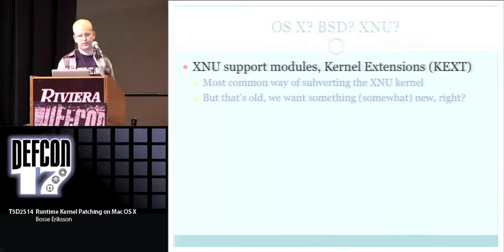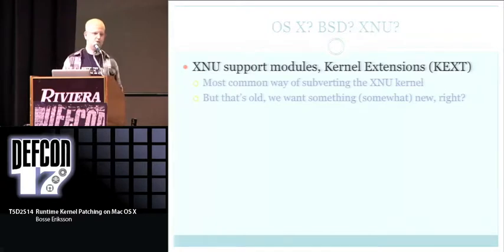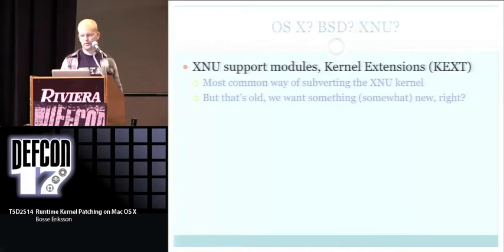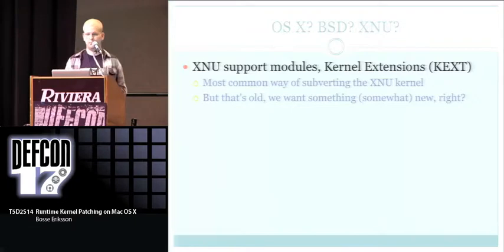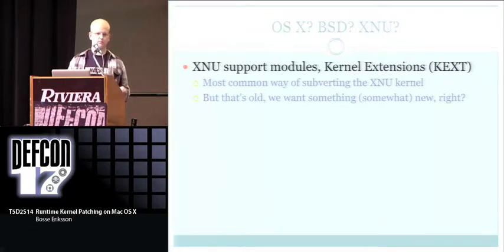The XNU kernel, like any modern operating system, supports modules. On Linux you have LKMs, BSD has KLDs, and OS X has KEXTs — kernel extensions for device drivers and so on. You can extend the kernel at runtime and add new code to it. This has been the primary way to subvert the XNU kernel. Weapon X, for example, uses kernel extensions to patch it.